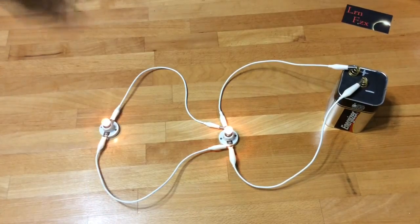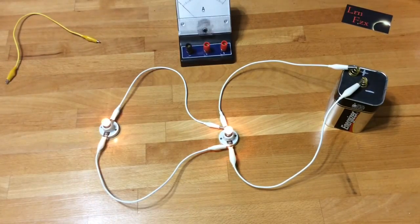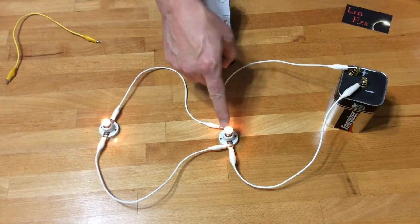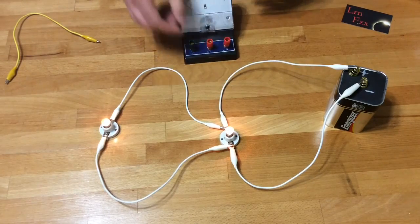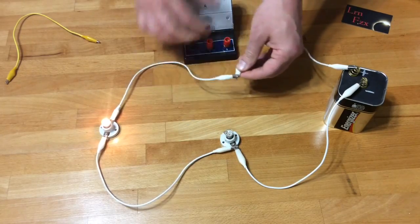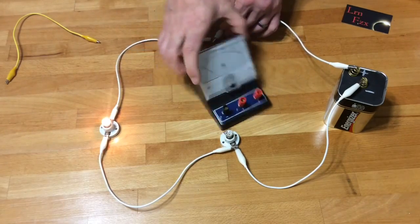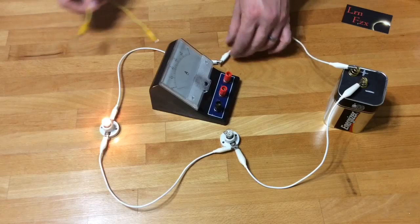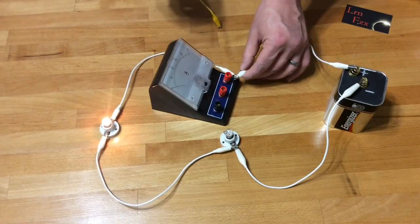And now the final current, the current flowing through that bulb closest to the battery. Disconnect both of the connectors, place the ammeter in between that double connector and the bulb. Or do it on the other side.